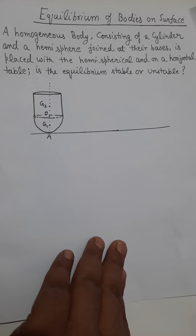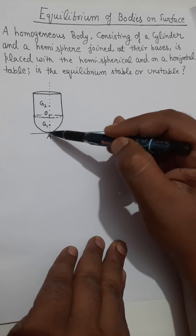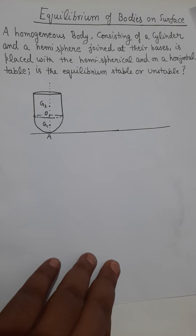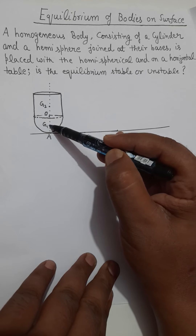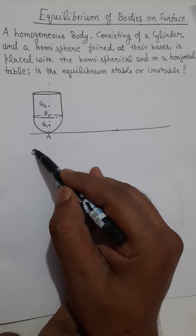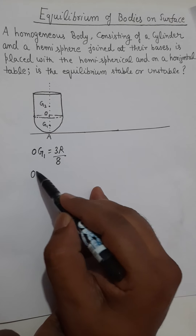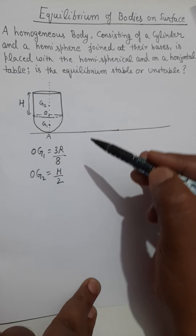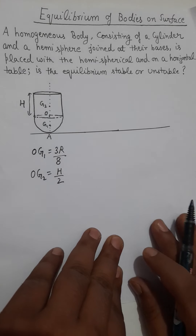Let us start the question now. As you can see in this figure, point A is the point of contact, G1 is the center of gravity of the hemisphere, and G2 is the center of gravity of the cylinder. You should remember that OG1 = 3R/8 (position of the center of gravity of hemisphere), and OG2 = H/2, where H is the height of this homogeneous cylinder. So the location of the center of gravity must be known in advance to solve this question.